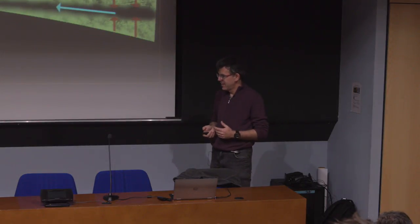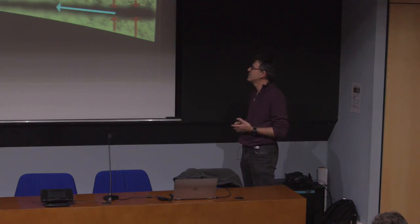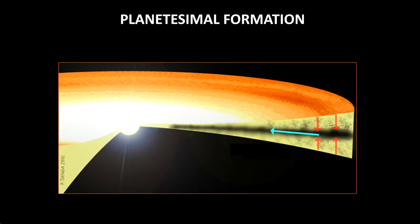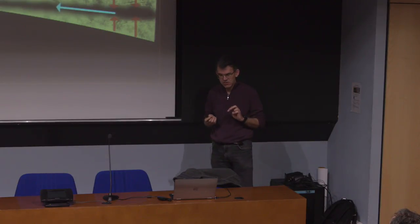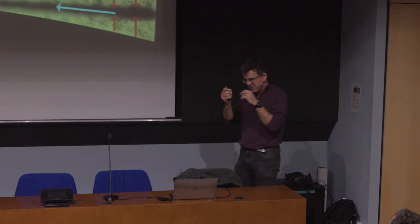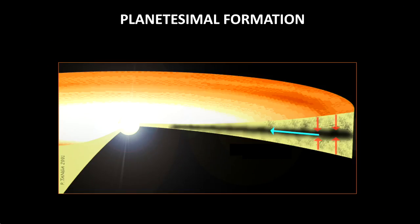Everybody knows that planets form in protoplanetary discs. When the star forms, the collapse of gas towards the central star necessarily creates a disc structure by conservation of angular momentum — predicted long ago by Laplace and now routinely observed when we image young stars in stellar associations. This protoplanetary disc is made mostly of gas but also of solid particles, and the mass ratio between gas and particles is roughly 100 to 1, though this may depend on the chemistry of the star. The dust is initially very small — micron in size or even smaller — and the particles can collide and start to stick together.